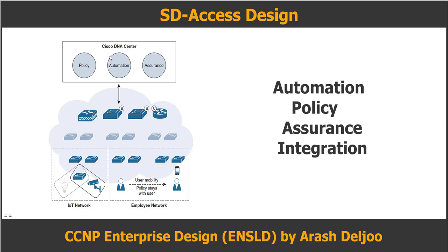In Cisco DNA Center, we have three important parts: policy, automation, and assurance. In the SD Access fabric, we can see wired devices, wireless devices, and examples such as IoT or Internet of Things networks and also employee networks. You will learn more about SD Access design as we review the SD Access architecture.